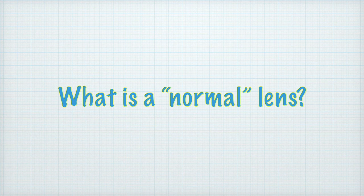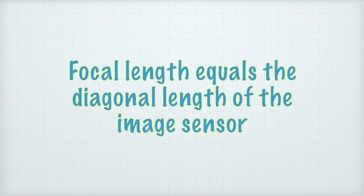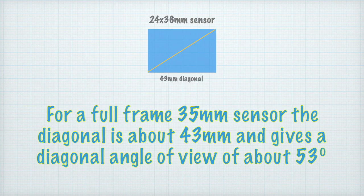Just what is a normal lens? It is a lens that produces a photo that, when viewed at a normal distance, puts the eye at the perspective point. The focal length of a normal lens is determined by the diagonal length of the sensor, which gives a similar angle of view to the human eye. For a 35mm sensor, the diagonal is about 43mm and the diagonal field of view is 53 degrees. In practice, anything from 40mm to 60mm is considered normal for a full frame 35mm camera.